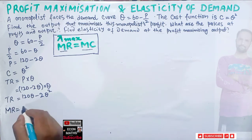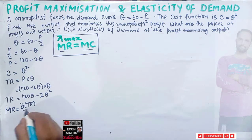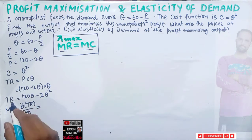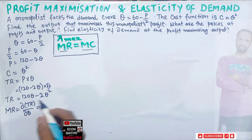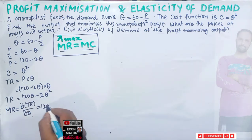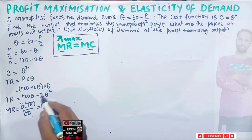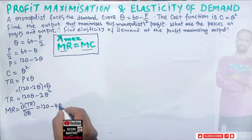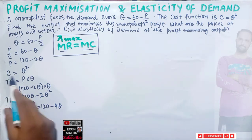Marginal revenue is simply the derivative of total revenue with respect to quantity. Taking the derivative of TR = 120q - 2q² with respect to q: the derivative of 120q is 120, and the derivative of 2q² is 4q. So marginal revenue = 120 - 4q.